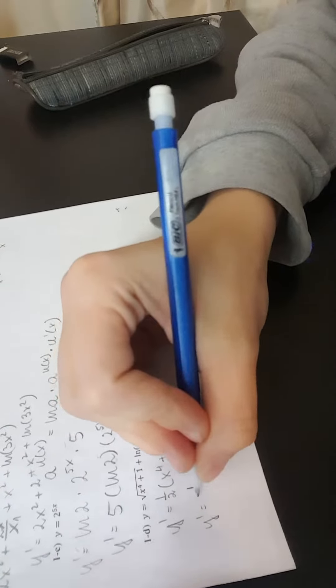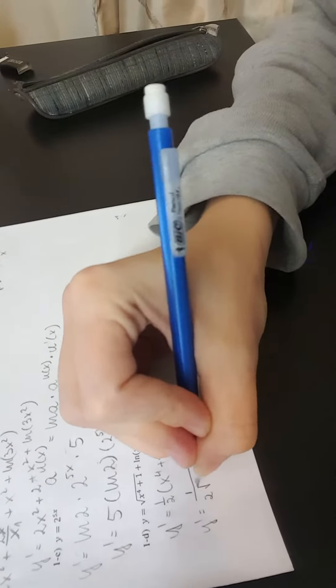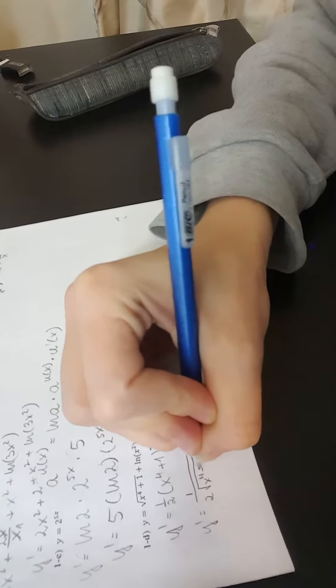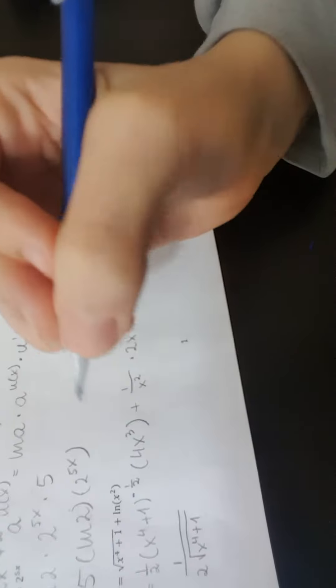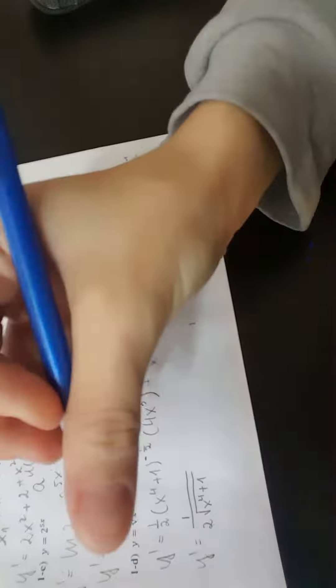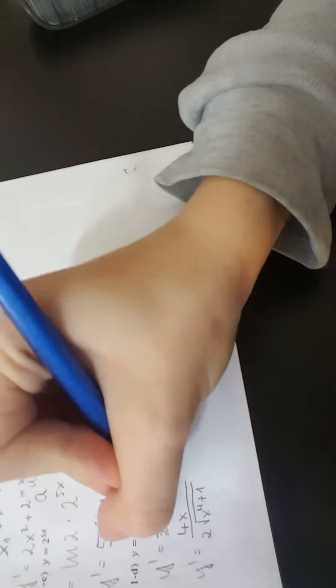So y prime equals, so we can rewrite this this way x to the fourth plus 1, and we can multiply which is 4 cancel.